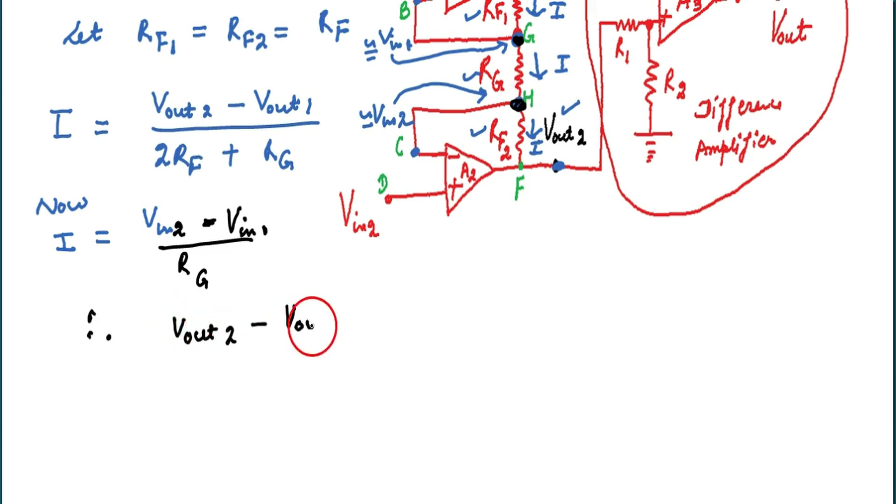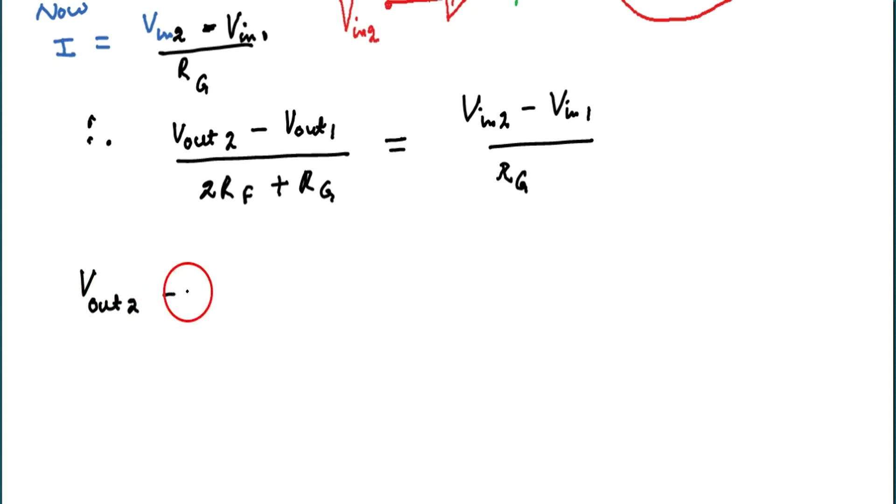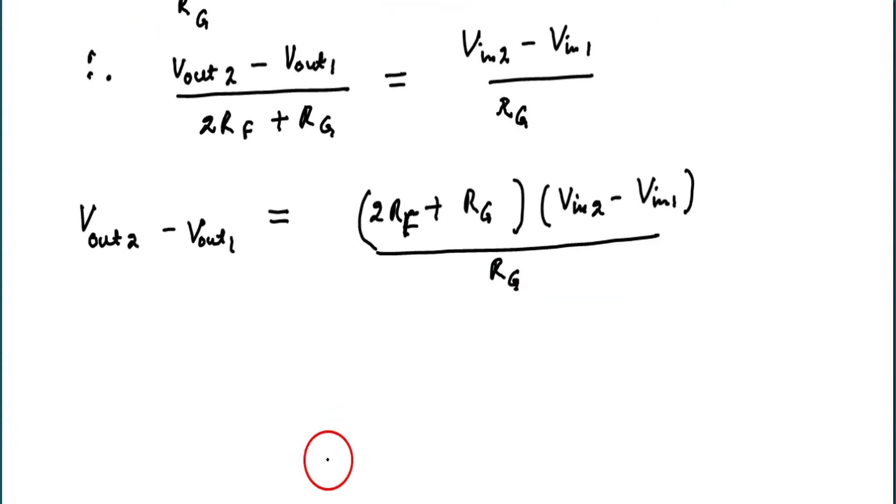Now equating the two currents, the left hand side is same, that means right hand side will be equal. So simplifying the expression now, Vout2 minus Vout1 becomes 2Rf plus RG into Vin2 minus Vin1 divided by RG.